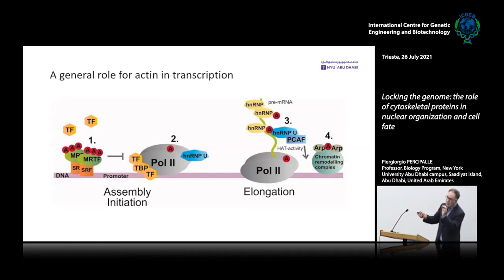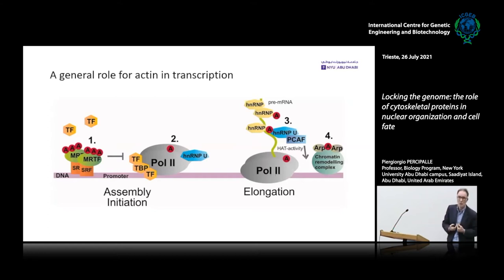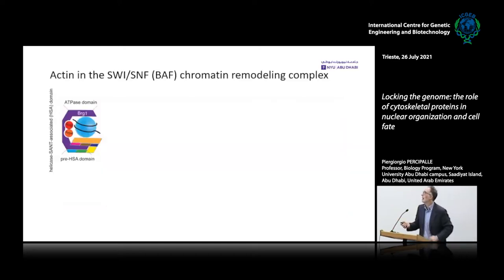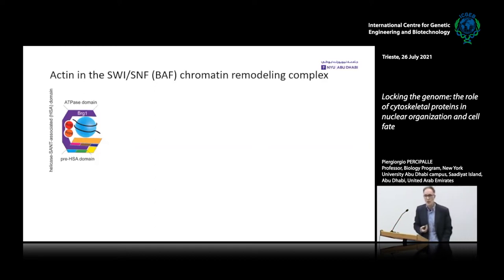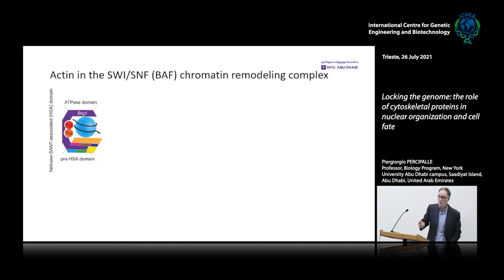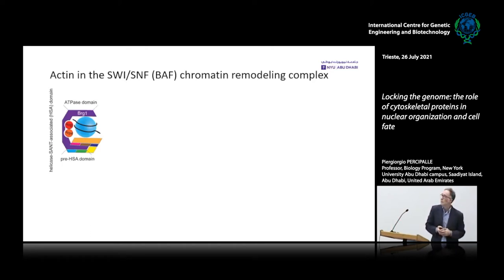The impact of actin is not only at the epigenetic level but also in terms of chromatin remodeling. Many labs have found that actin is a component of chromatin remodeling complexes — probably the best characterized being SWI/SNF, or PBAF. This has been characterized extensively by Gerald Crabtree's lab, and now we have the crystal structure. Actin binds to the actin-related protein ARP4 and interacts with BRG1, the catalytic subunit of PBAF, and is required for its catalytic activity.